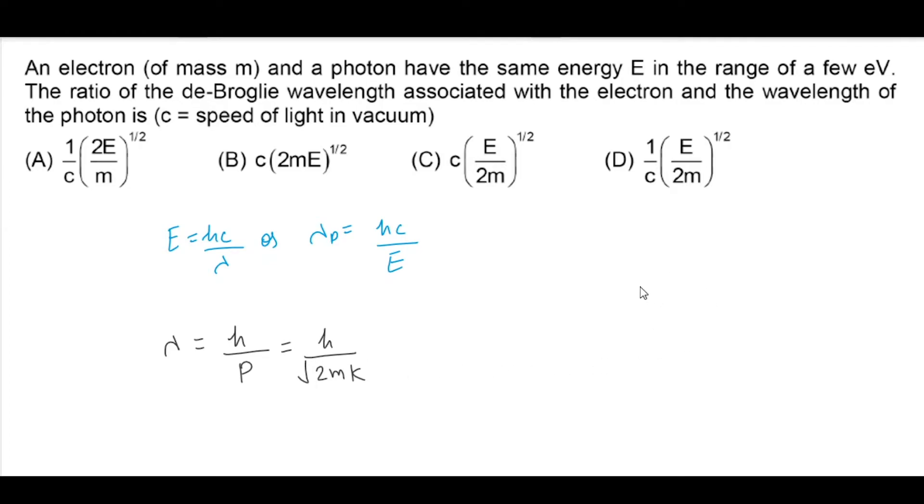If we take it to the kinetic energy, that is half M V square. If we multiply this 2m, M-square V-square, then clearly 2mK is equal to P-square. We can write P as root over 2mK and here K is equal to E. This is the de Broglie wavelength for the electron.